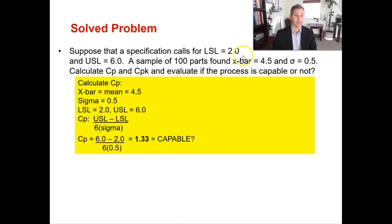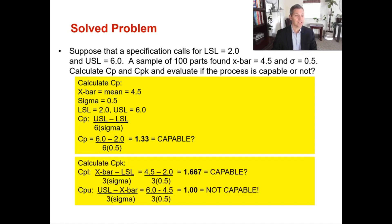But since we also have the X-bar, we can calculate CPK to see if the process is off-center. For the lower limit: (4.5 minus 2) divided by (3 × 0.5) equals 2.5 divided by 1.5, giving 1.667. The process still looks capable. But we're not done — now calculate the upper limit: (6 minus 4.5) divided by (3 × 0.5) equals 1.5 divided by 1.5, giving a CPK of 1.0, which means this process is not capable.